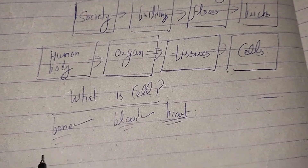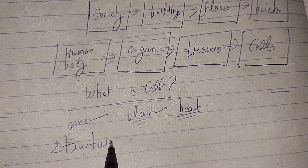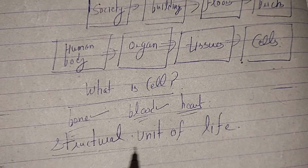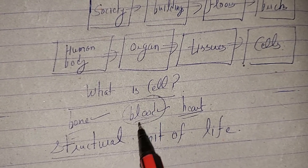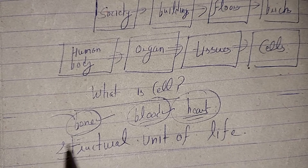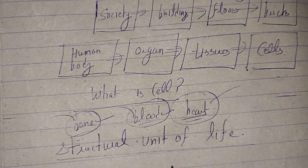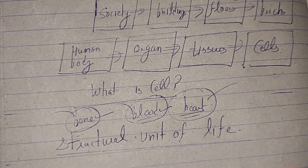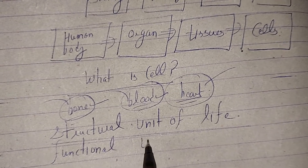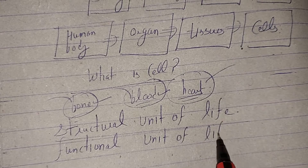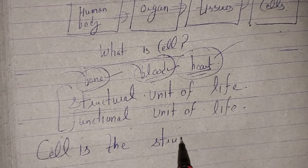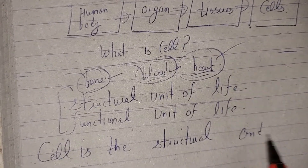Therefore, it is the structural unit of life. Why structural? Because everything is made up of cells. Blood performs many functions, bone performs many functions, heart performs many functions — and since all are made of cells, the cell is responsible for performing all these functions. So it is the functional unit of life. Cell is the structural and functional unit of life.